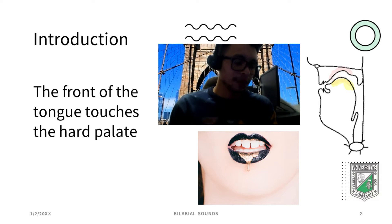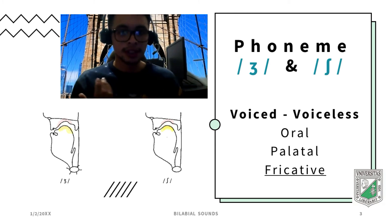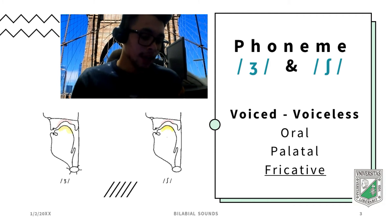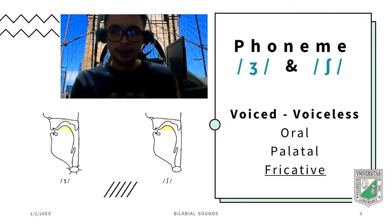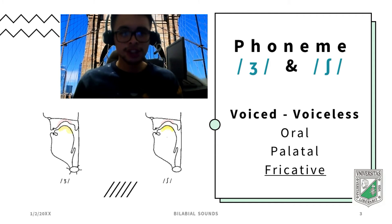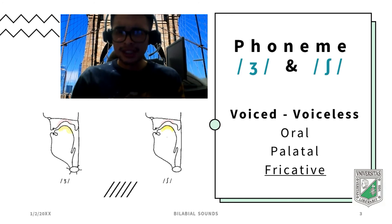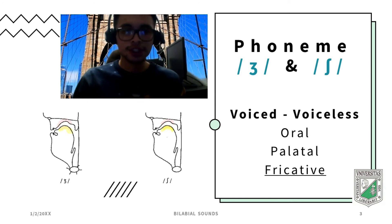We have examples of these consonants. We have voiced and voiceless ones. They are also oral, which means the air goes through the mouth, and they are palatal fricatives. The first one, that looks like a three, sounds something like the sound in 'vision.' The next one, similar to an S, sounds like 'shh' — that's the sound of that consonant.